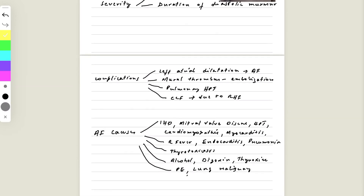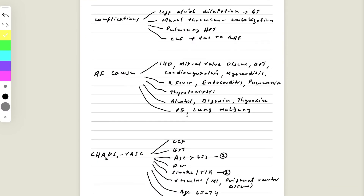The examiner may ask about complications of mitral stenosis. Mitral stenosis causes left atrial dilatation, which can lead to atrial fibrillation. Due to pooling of blood through the narrow mitral valve, there can be mural thrombus formation and embolization, causing TIA or CVA. The patient can also develop pulmonary hypertension due to backflow from the left atrium, and congestive cardiac failure due to right heart failure.